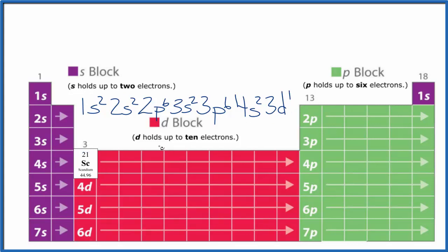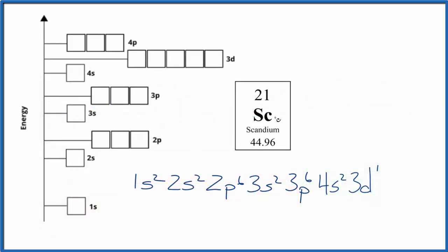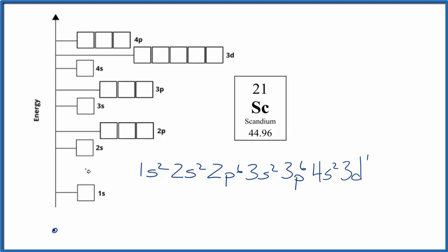So we can use this now to write the atomic orbital diagram for scandium. The electron configuration and the atomic orbital diagram are just trying to show where the electrons are around the nucleus of the scandium atom. You can think of the nucleus as being here, and these energy levels are around it, like shells.